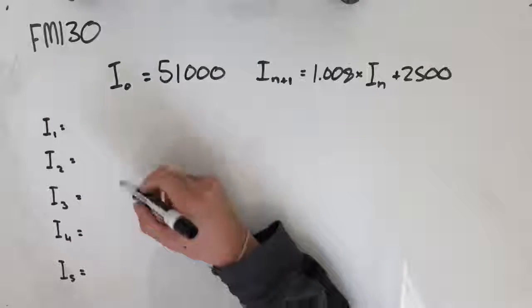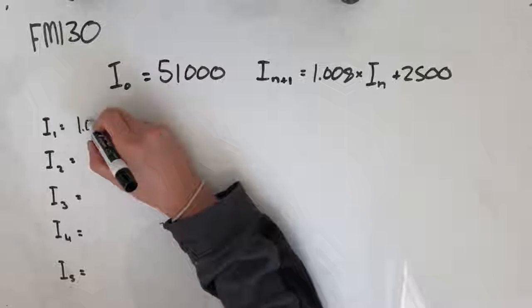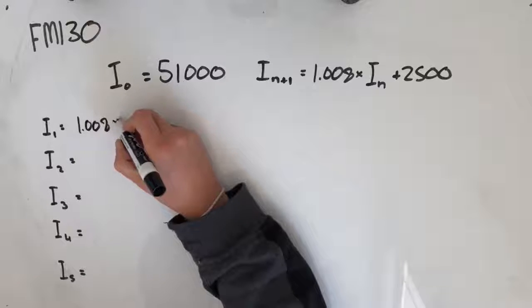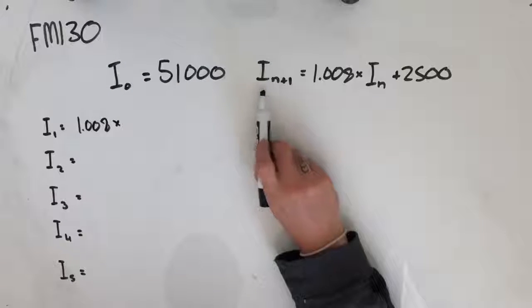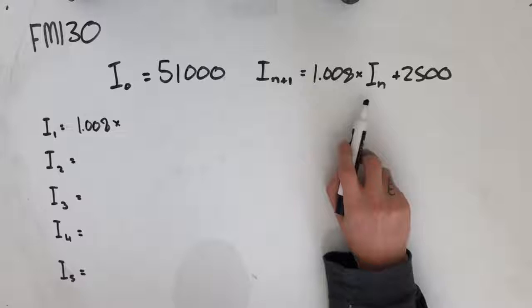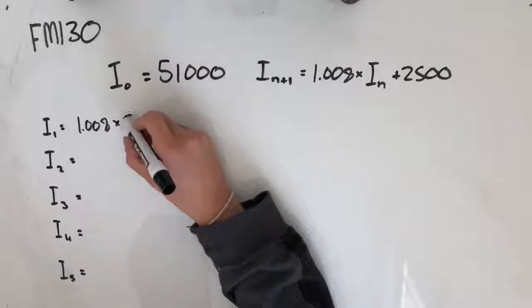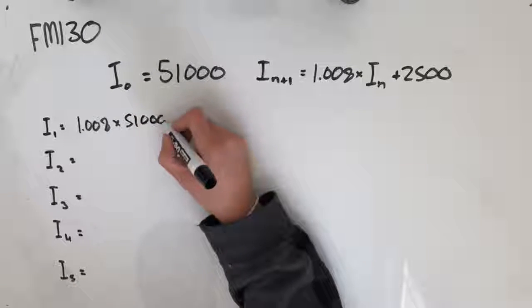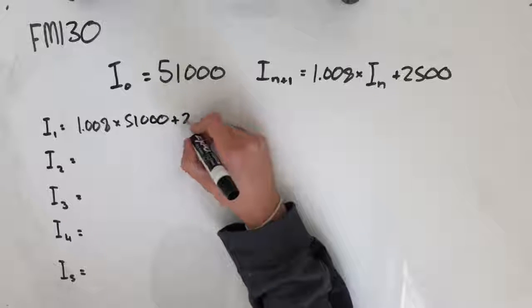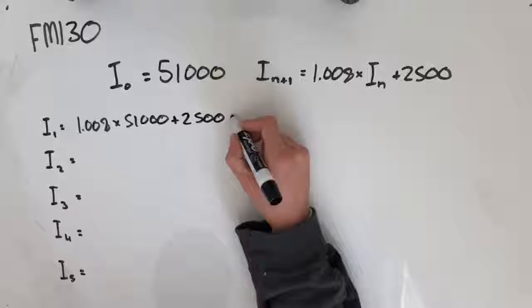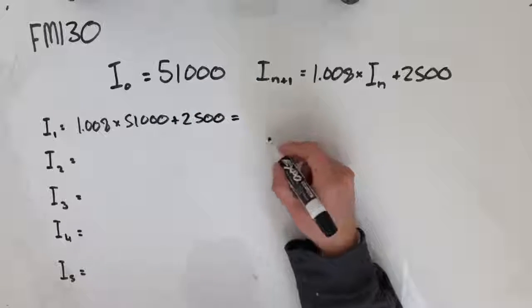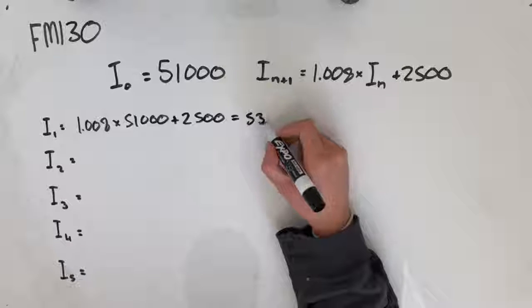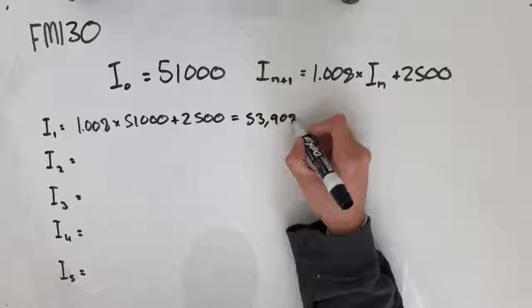So if we were to try and find I1, we would take 1.008 times—if our IN+1 is I1 and we take an I0, then that's going to be 51,000 in here plus 2,500. Plugging that into a calculator is going to give you an answer of 53,908.